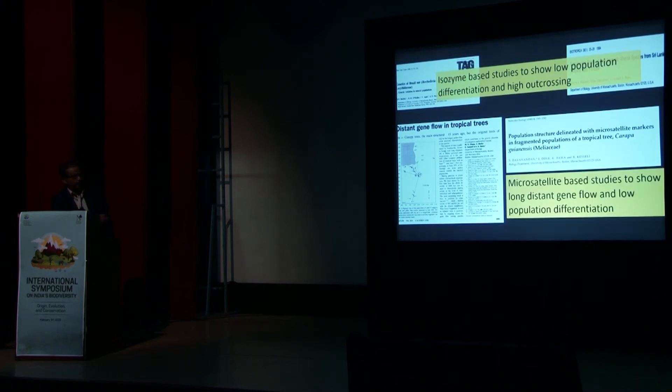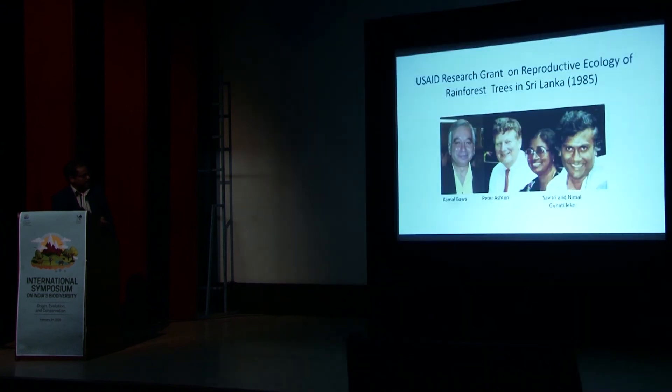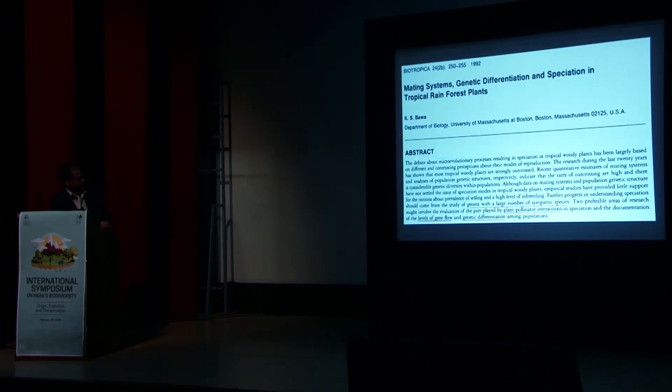And then, the third set of studies, based on genetic data, using isozymes, again, low population differentiation, and high outcrossing. And then, later on, you see microsatellite data, long distance gene flow, and population differentiation. All these things actually pointing towards the outcrossing is predominant, and also the speciation should be mostly selection-based. And this particular study actually is saying to look into the speciation, so we need to look into generalize with large number of sympatric species, and look into plant pollinate interactions, levels of gene flow, and genetic differentiation. Those are the crucial elements to study using any sympatric species groups.